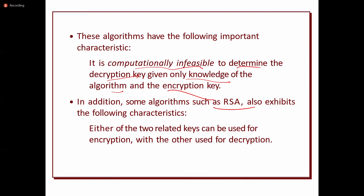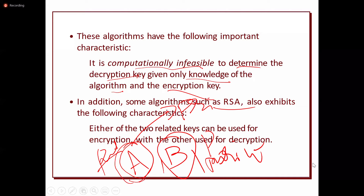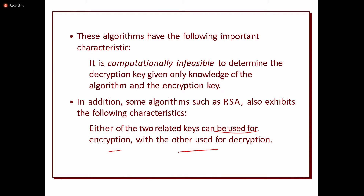The main algorithm used for a public key cryptosystem is the RSA algorithm. Whatever the public and private keys are with the sender or receiver, the sender can choose one as the public key and the other becomes private, or vice versa. That depends on the sender's choice — one can be used for encryption and the other for decryption.